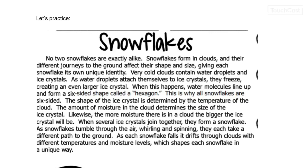The shape of the ice crystal is determined by the temperature of the cloud. The amount of moisture in the cloud determines the size of the ice crystal. Likewise, the more moisture there is in the cloud, the bigger the ice crystal will be. When several ice crystals join together, they form a snowflake.